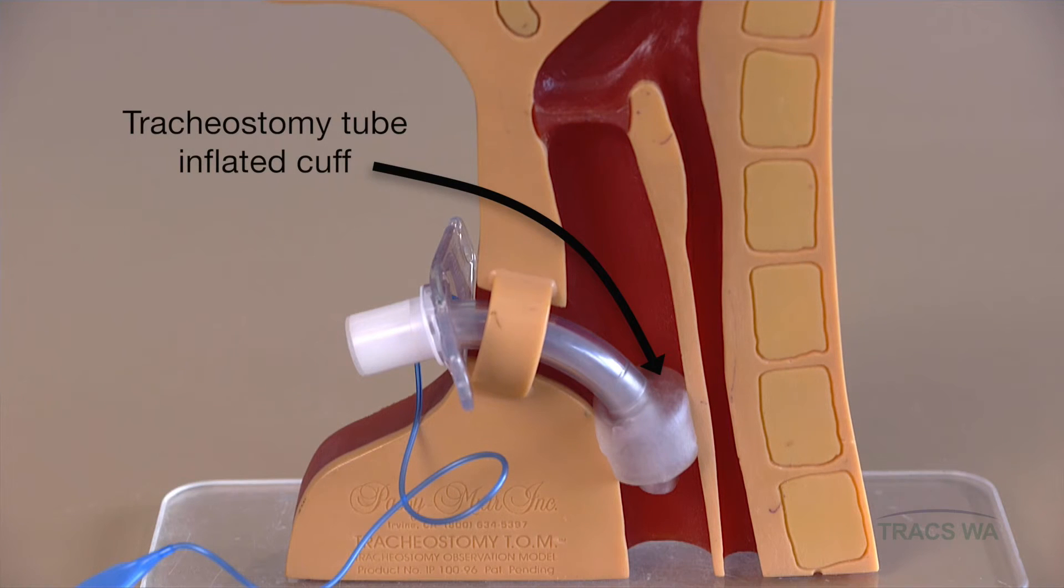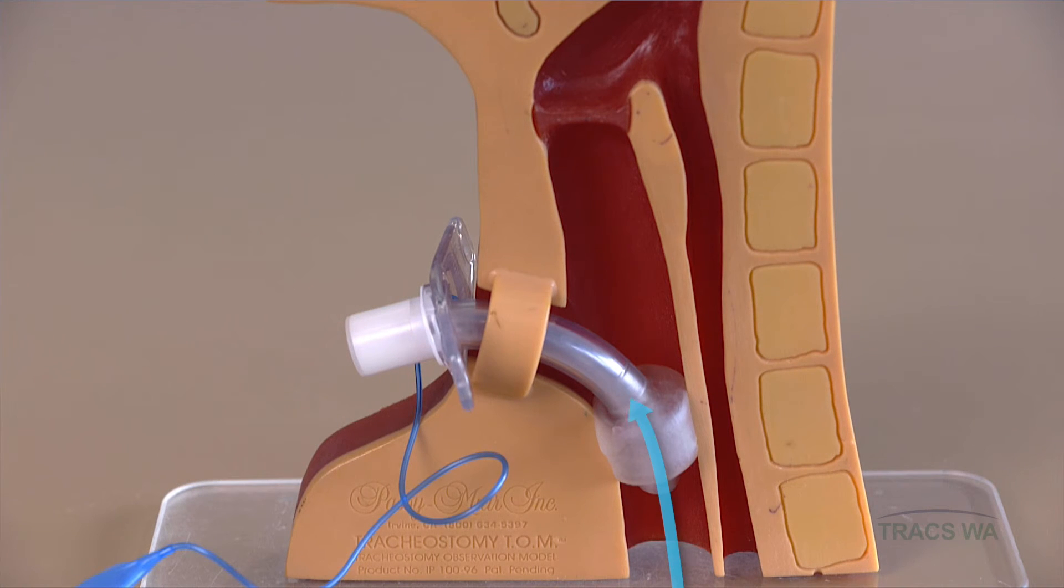If the tracheostomy tube has a cuff, when the cuff is inflated, no airflow is possible through the upper airway.